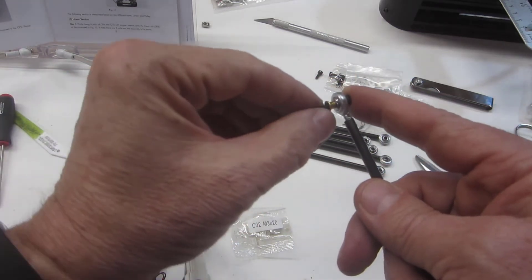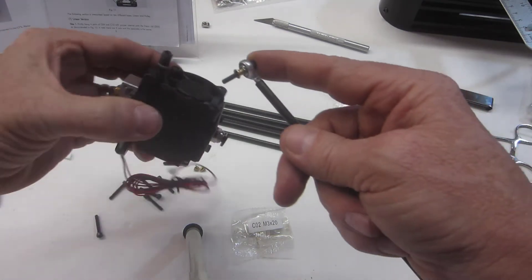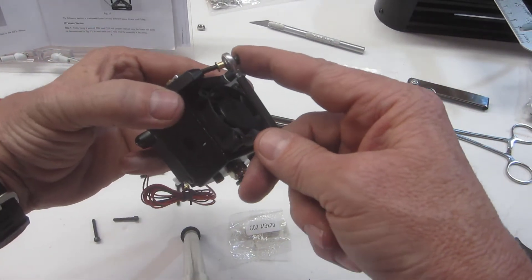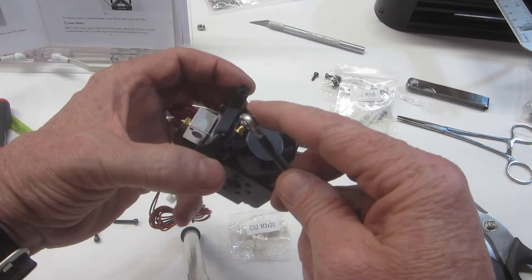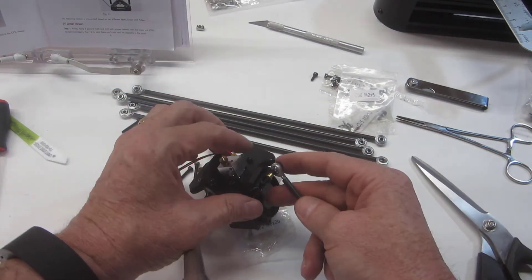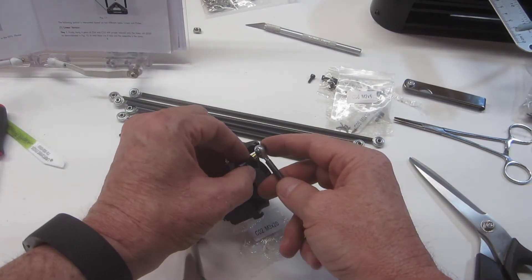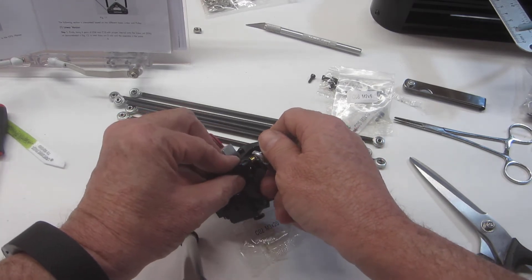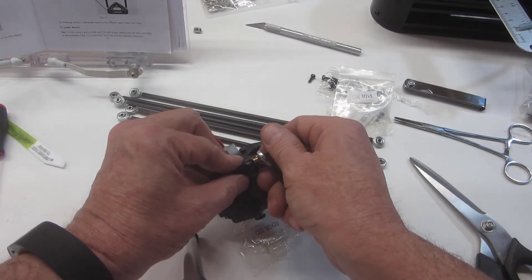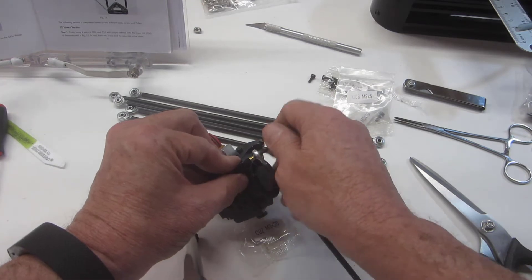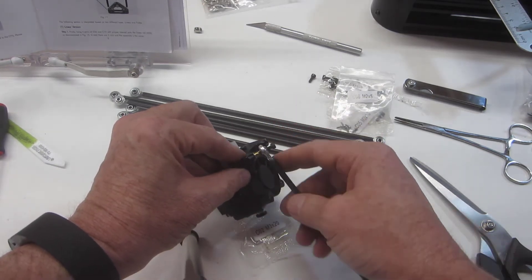So this goes on here and then it's going to thread into the threaded hole in the side of the effector here. This is just going to thread in here like so. I'm not going to show it all, but I'm going to put this on here.